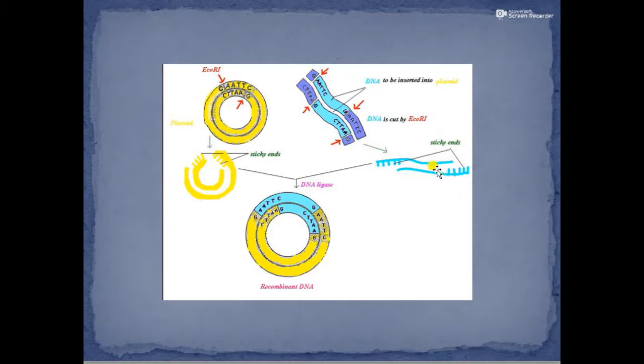The plasmid and the gene of interest are cut by the same restriction enzyme and treated with DNA ligase, resulting in the formation of recombinant DNA. This is the basic step of genetic engineering or recombinant DNA technology.